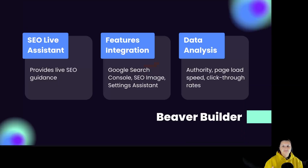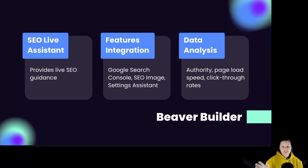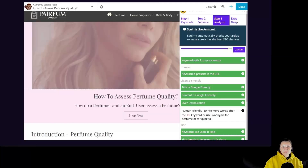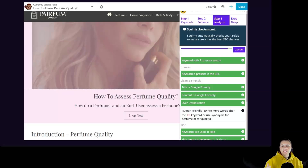Beaver Builder provides live SEO guidance with the help of the SEO live assistant. Features include Google Search Console integration, SEO image settings assistant, and data analysis covering authority, page load speed, and click-through rates. The Beaver Builder integration with Squarly SEO includes live guidance and a range of SEO tools to enhance content and monitor performance effectively.